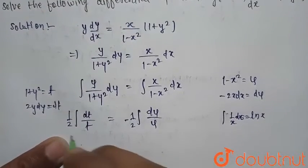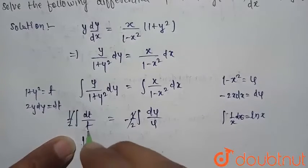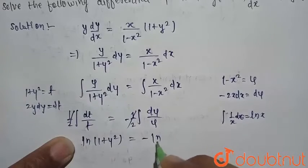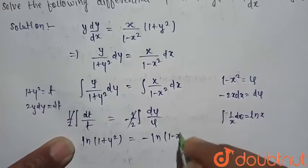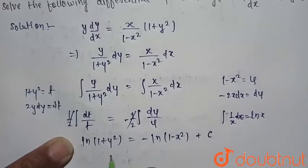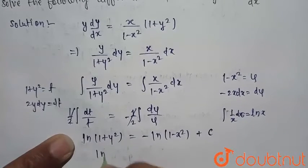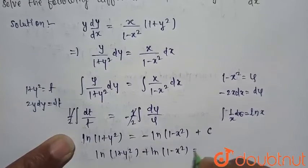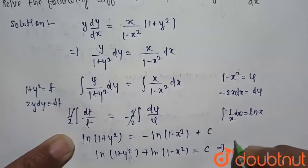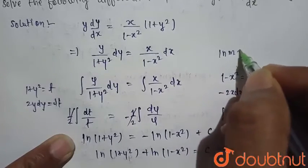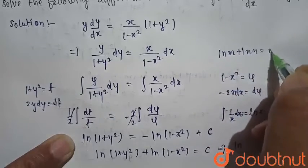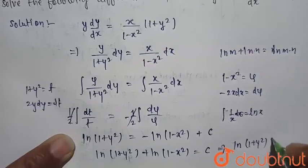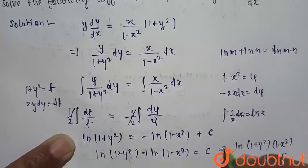Using the standard result that the integral of 1 over x is ln x, we get (1/2) ln t equals minus (1/2) ln u plus constant c. Substituting back, this gives ln(1 plus y squared) equals minus ln(1 minus x squared) plus c. Applying the log property that ln m plus ln n equals ln(m times n), we write ln[(1 plus y squared)(1 minus x squared)] equals c. This is our final answer.